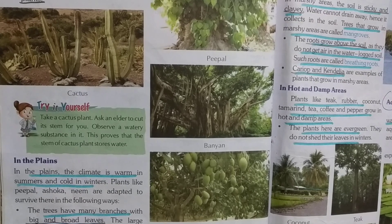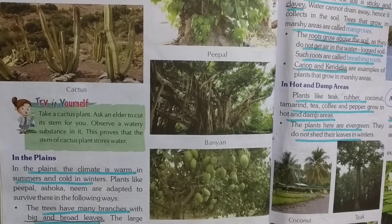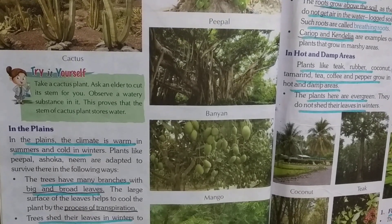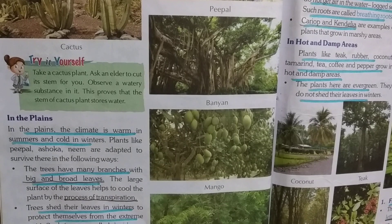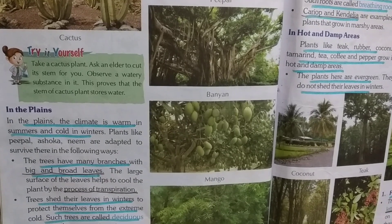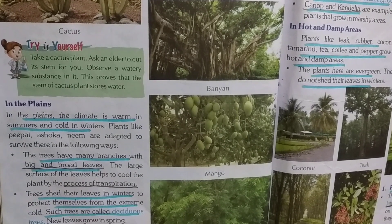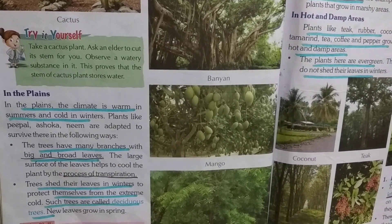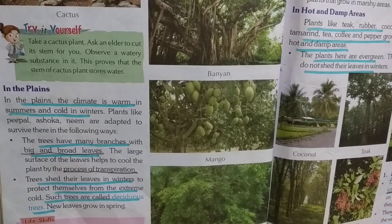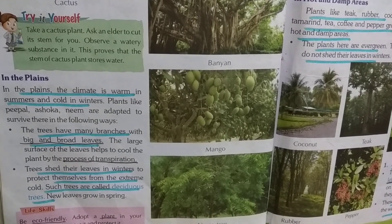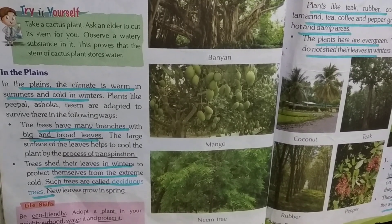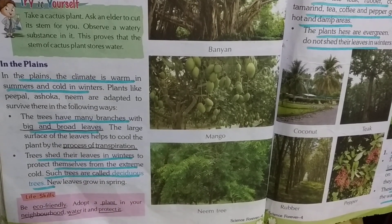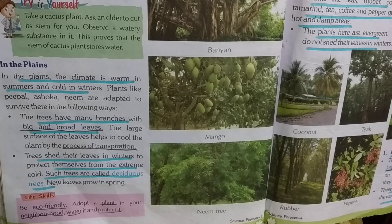We'll start in the plains. In the plains, the climate is warm in summers and cold in winters. Plants like peeple, shoka, and neem are adapted to survive there in the following ways.